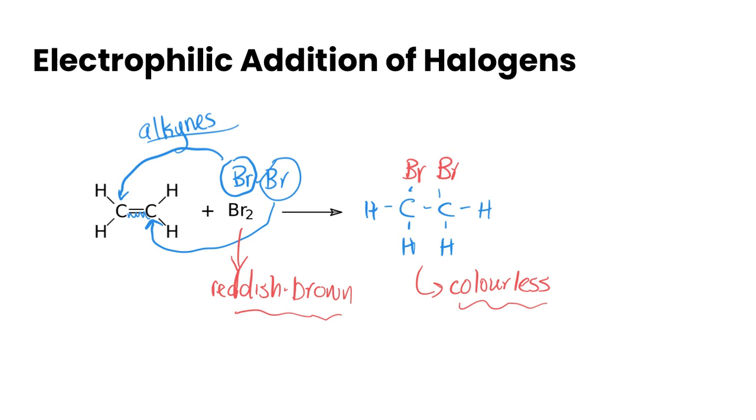For alkanes, they don't undergo this reaction unless there's a catalyst of UV or heat. Because we don't have that catalyst here, alkanes will not undergo this reaction. So it's a nice distinguishing reaction to use if you want to see if you have alkenes or alkynes present. This particular reaction, because we're adding halogens, is also known as halogenation.